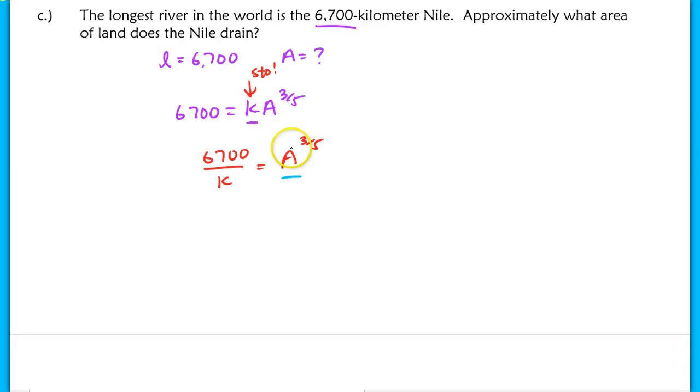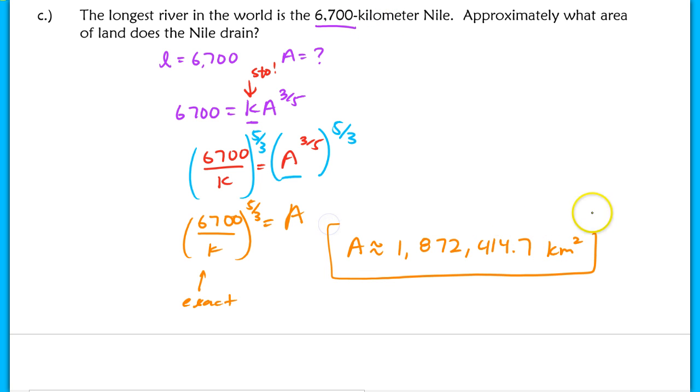If you think back to our exponents chapter, to isolate A, we had to raise both sides of this equation to the 5/3 power. The reason why we do that is because we want A to the first power, that's how we solve for A. We raise it to the reciprocal power, and we do that on both sides. So we have 6,700 over K raised to the 5/3. This is the actual value, so this is your exact value for A. Then if you were to find the approximate value of your area, you would type all that into your calculator, and I've already done that ahead of time. We end up with 1,872,414.7 square kilometers. This would be our approximate once we type it all into our calculator, and this is our exact with the K value that has been stored.